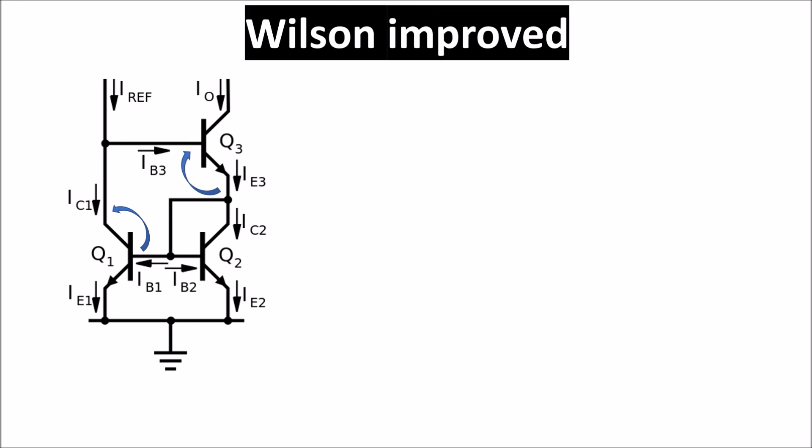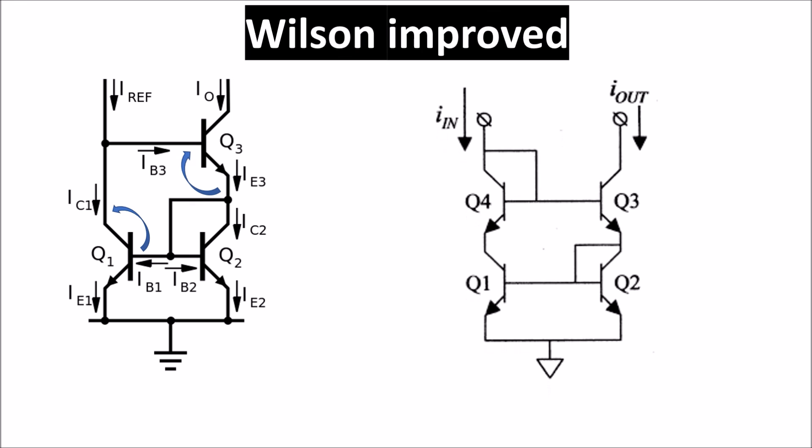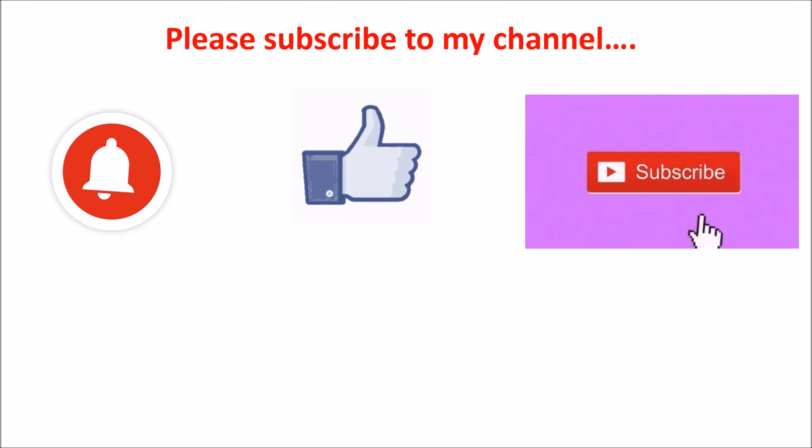For this reason, we have the improved Wilson configuration, in which adding a transistor, we force the base collector voltage of Q1 to 0.